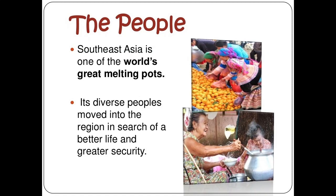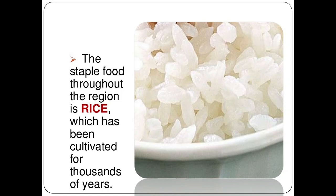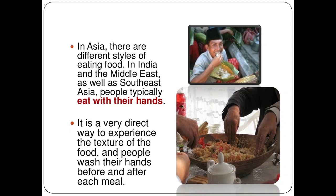More than three quarters of Southeast Asia's population is agricultural-based. Much fish is consumed in this region, reflecting the long coastlines and river environments of Southeast Asia. The staple food throughout the region is rice, which has been cultivated for thousands of years. In India, the Middle East, and Southeast Asia, people typically eat with their hands, which is a very direct way to experience the texture of the food.